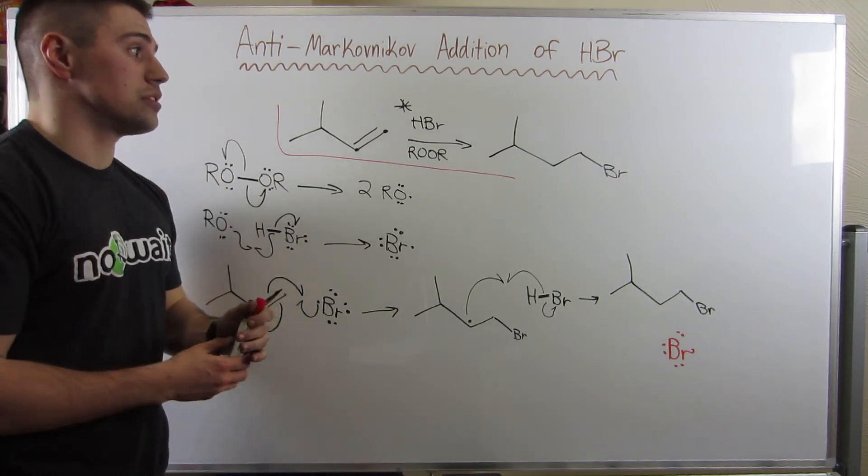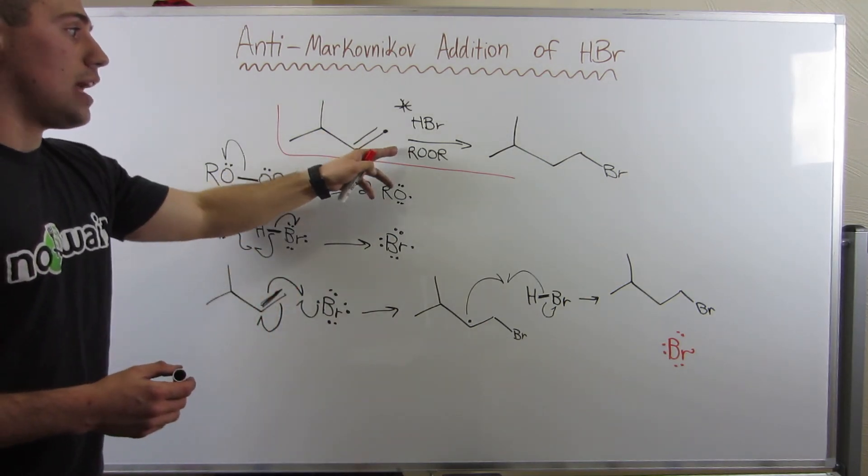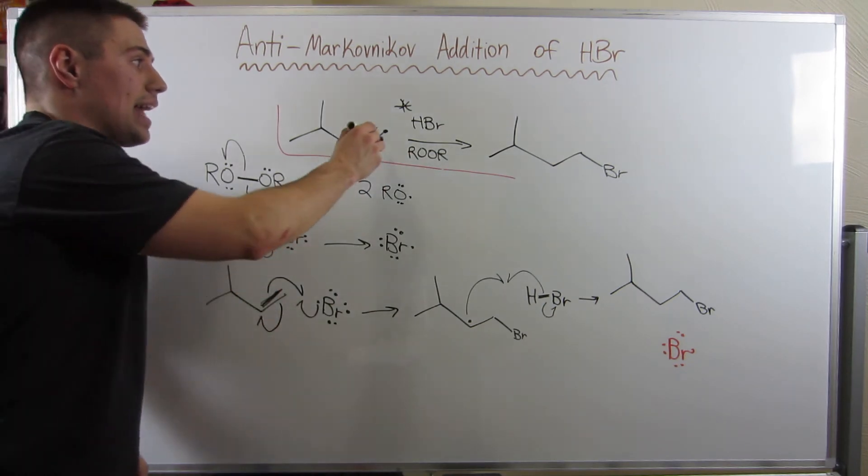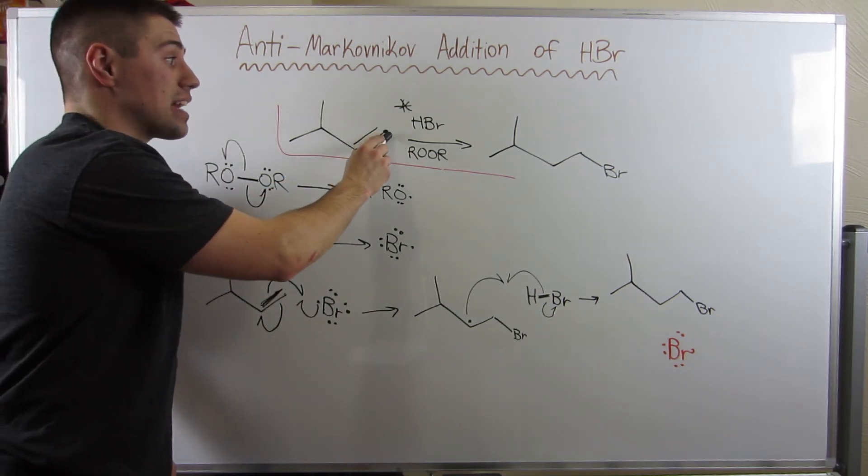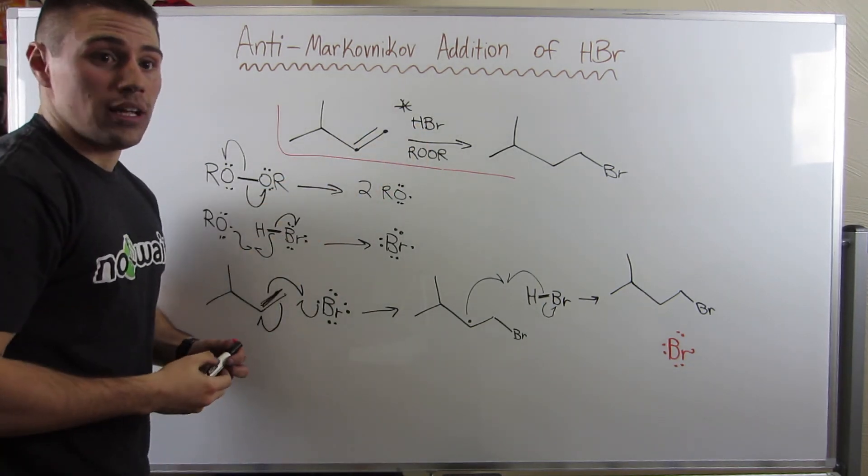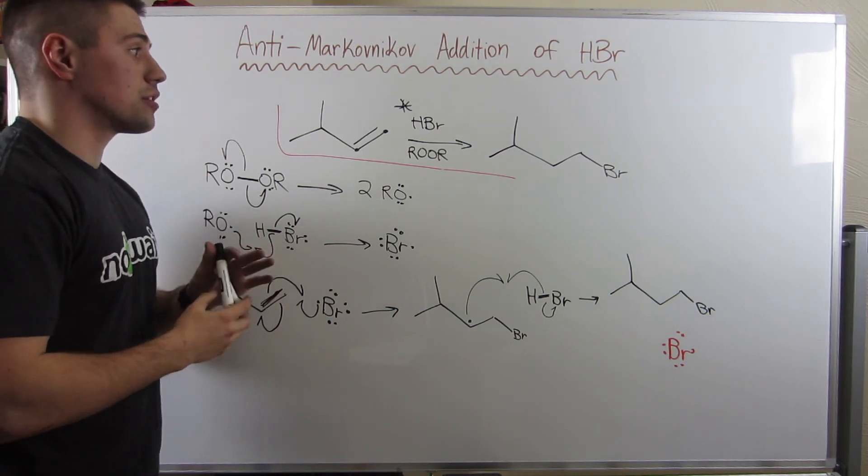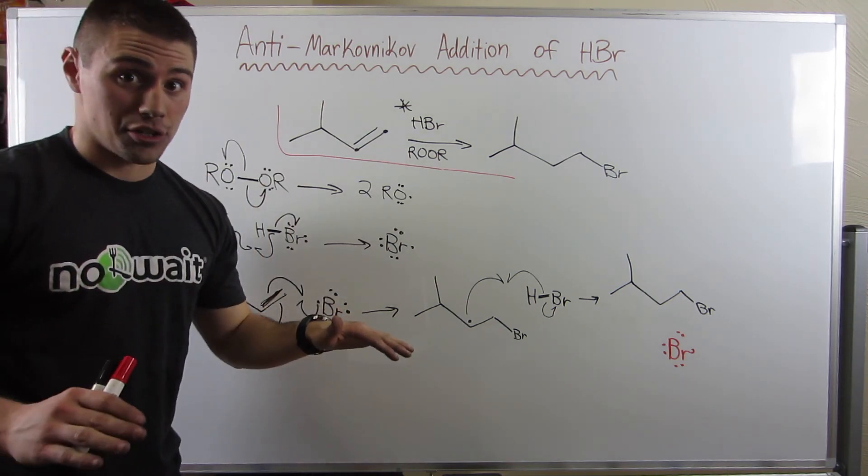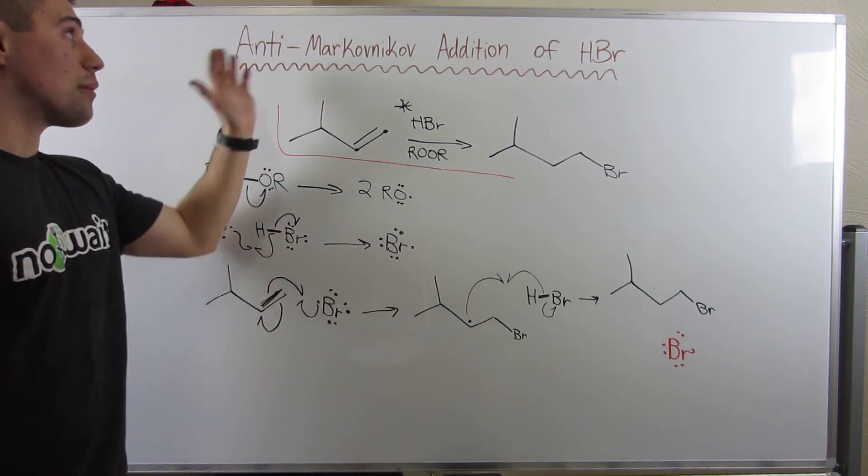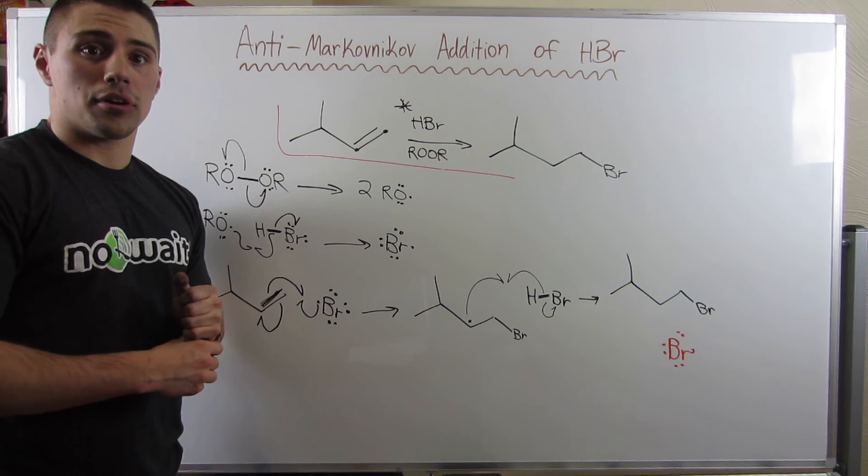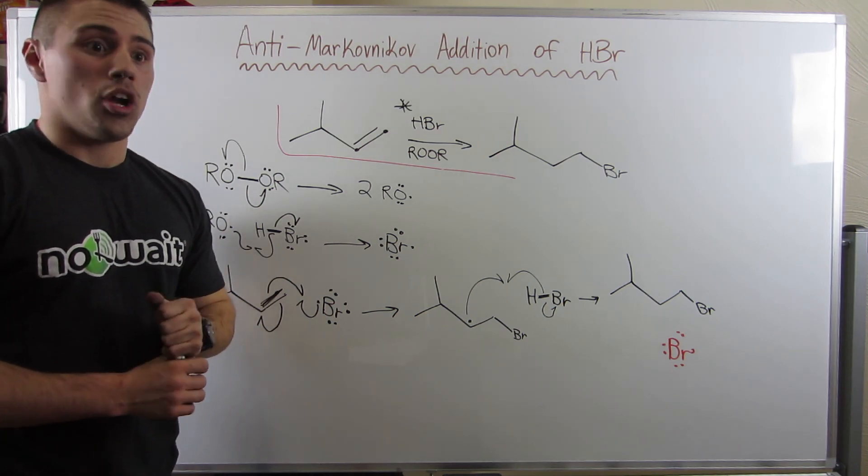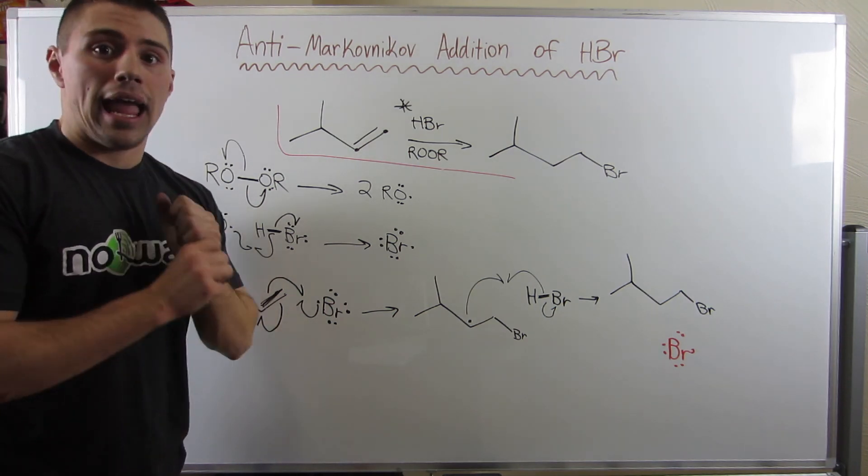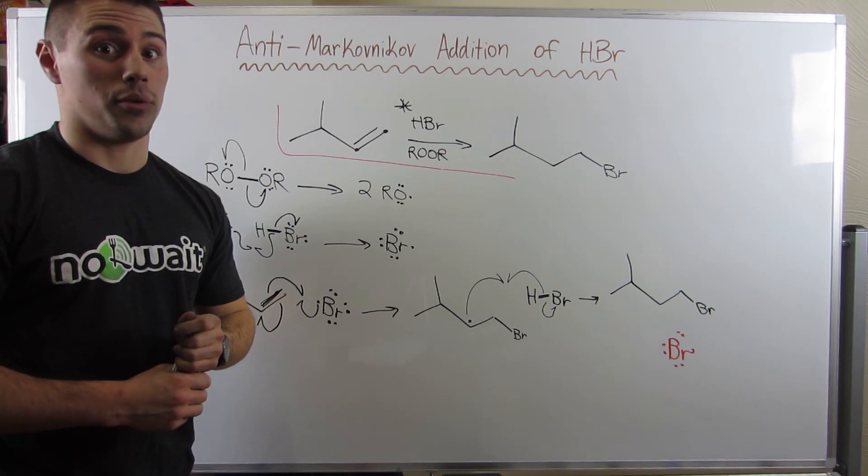So know this reaction. Just know if you see HBr and a peroxide, add in a Markovnikov anti-fashion Br. And just make sure if anyone gives you HCl or HI and peroxides, it's a no reaction. All right. That wraps things up for the anti-Markovnikov addition of HBr. We have a few more reactions to go. Hang tough with me guys. I know there's a lot going on.